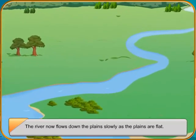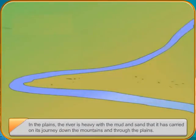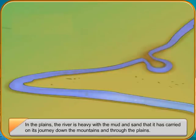During monsoons, water in a river fills beyond its capacity and it overflows its banks causing floods. When the water dries up, the silt is left behind. Silt makes the land fertile which is good for growing crops.